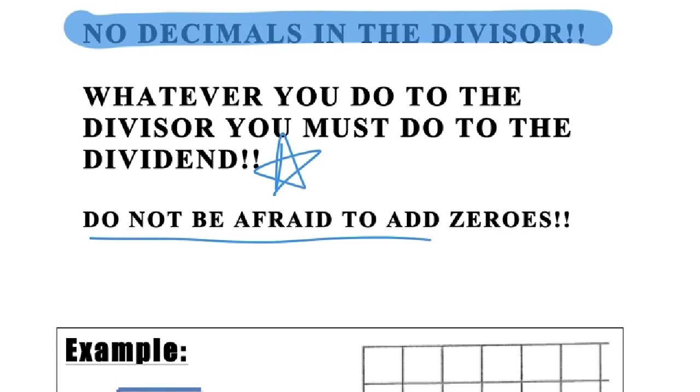Do not be afraid to add zeros. That's also very important. So if you're trying to bump your decimal and there are no places to bump it, you need to add some zeros in order to be able to make that happen.